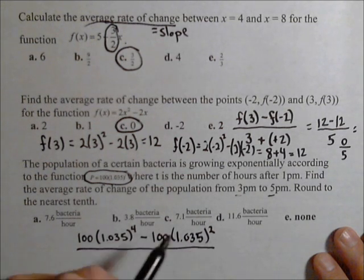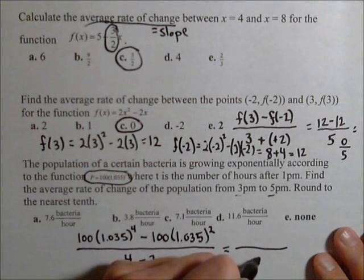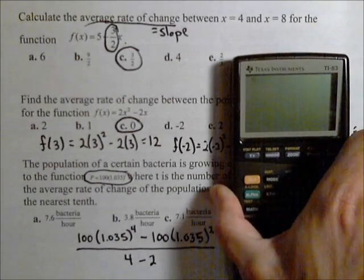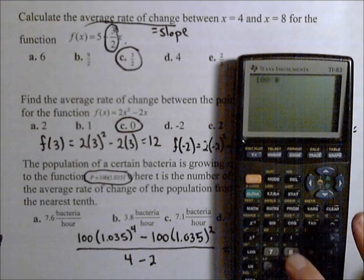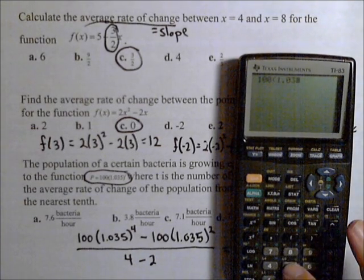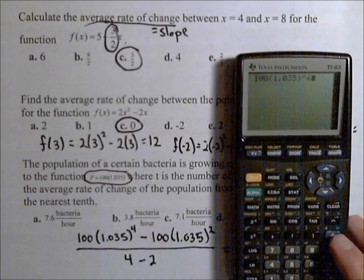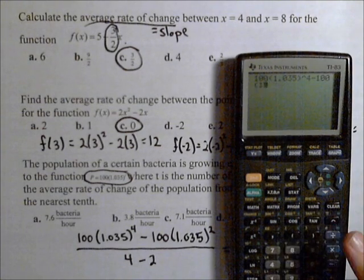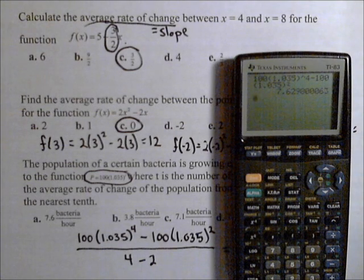So our inputs are 4 and 2, so our change in input is 4 - 2. So we already know our answer's going to be over 2. Let's use our calculator to help us calculate that numerator. So we have 100(1.035)⁴ - 100(1.035)². And there's our change in output.